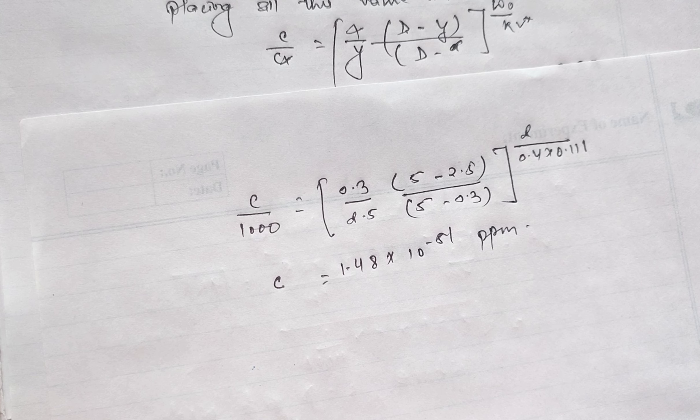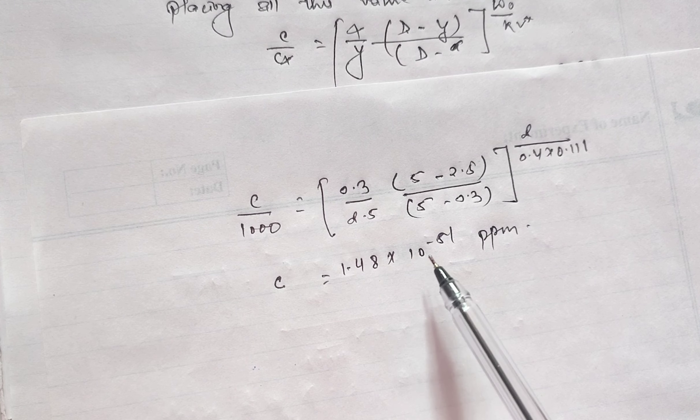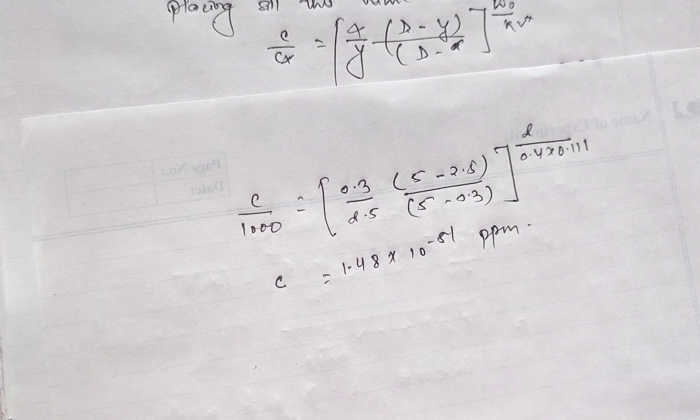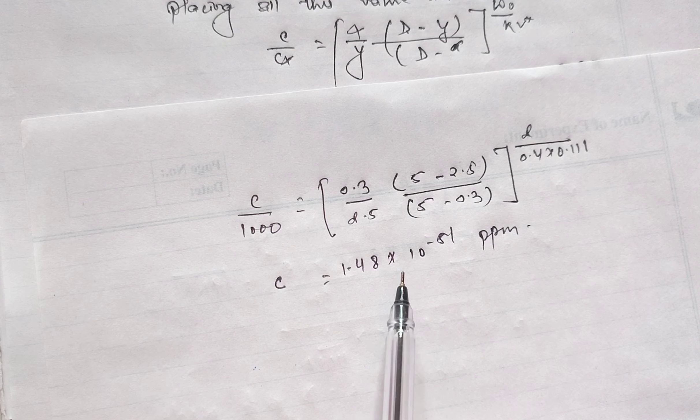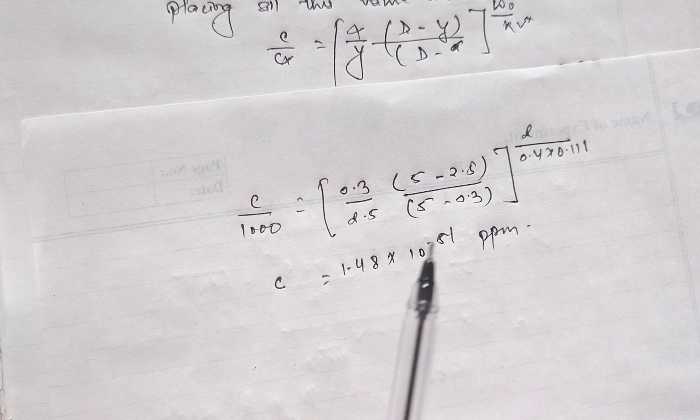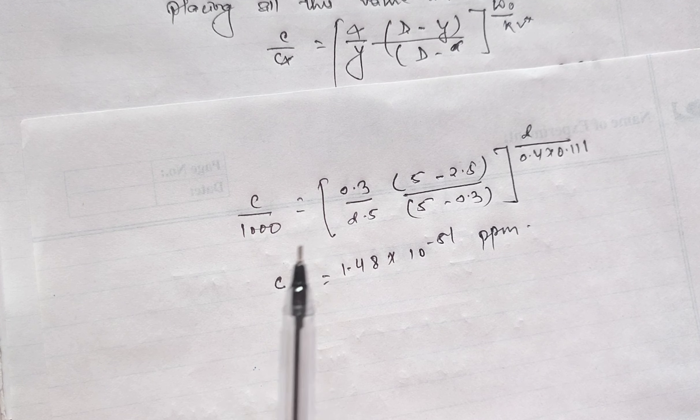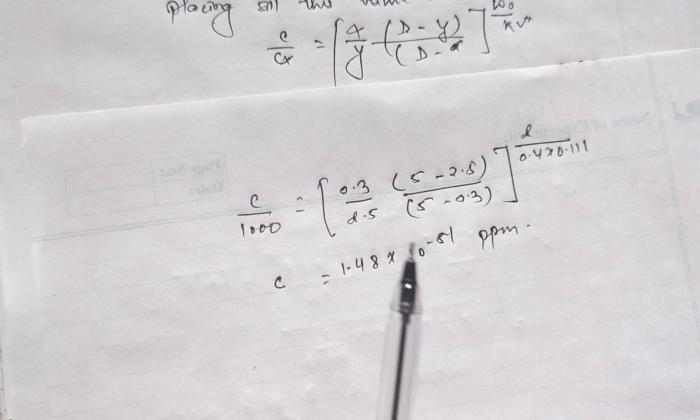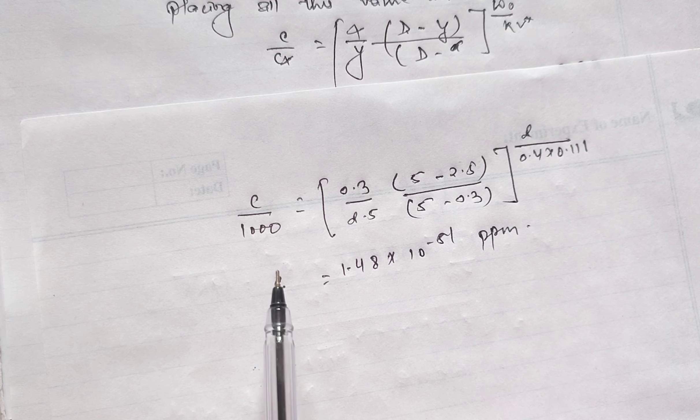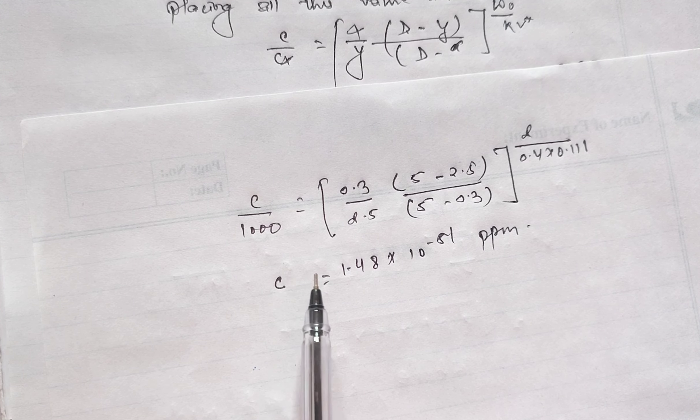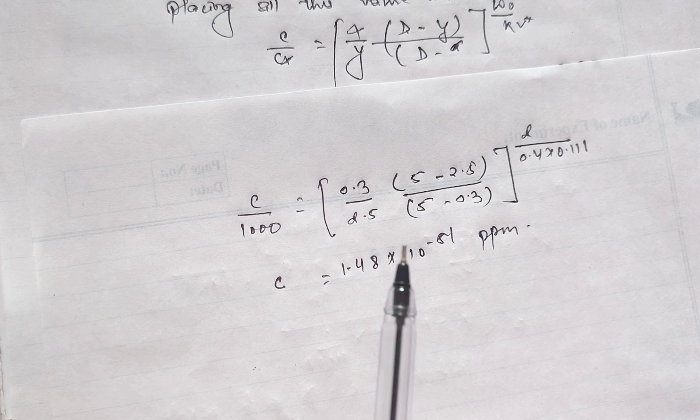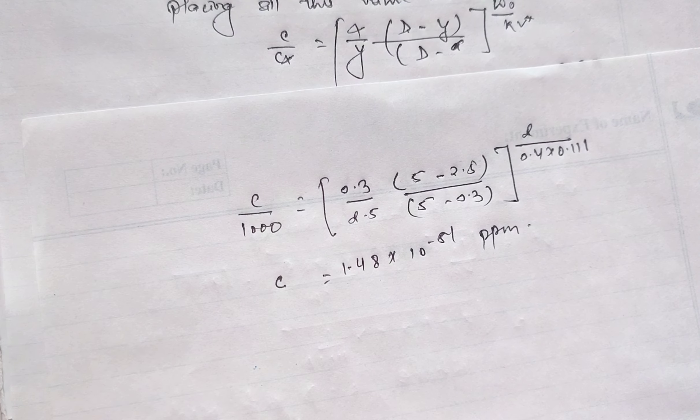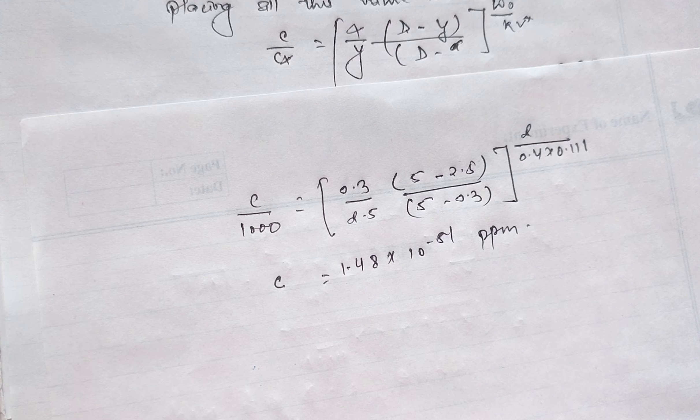The concentration of suspended load as per the given data will be 1.488 × 10^(-51) ppm. The value is so negligible because the velocity is high in this given question. If the velocity is very less, then at that time the suspended load concentration inside the channel will be more.